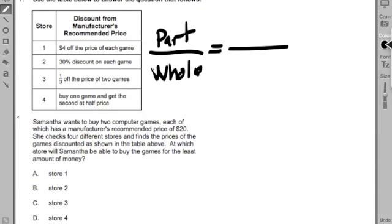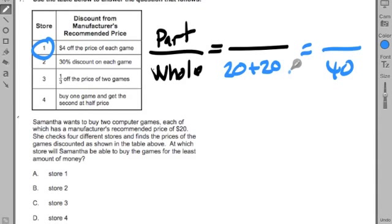So what is my part and what is my whole? If we think about this in terms of savings, this first store here, the whole would be what Samantha would be paying if she didn't have a deal. If there was no deal, she'd be paying $20 per video game, so she'd be paying $40. But Samantha's smart. If she goes to store number one, she gets $4 off. So that's $4 on this one plus $4 on this one. So she's really saving 8 out of 40.